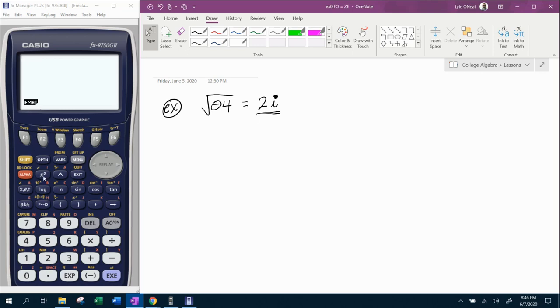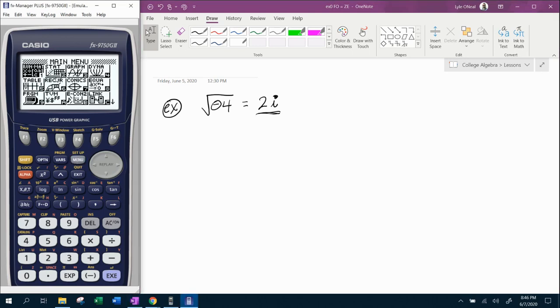Notice that right above the x squared button is the square root, and if you're wondering how did I get here, if you hit the menu button, that's going to be the run option here, run-math, and you hit execute to get to the screen where you actually calculate.